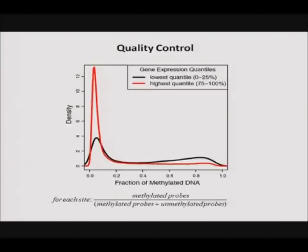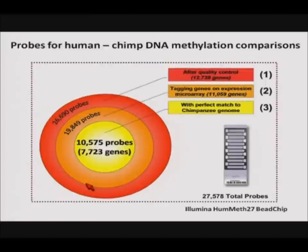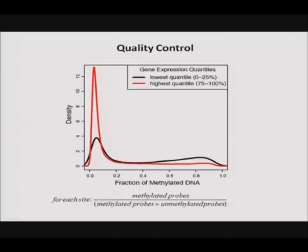We went through several quality control steps to confirm expected patterns in our data. The first was to look for correlations between methylation and expression, expecting negative correlations, which we do indeed see. Here I'm plotting density distributions of methylation values for genes with the highest and lowest expression levels averaged over all samples. The x-axis shows the fraction of methylation. The majority of sites were unmethylated regardless of tissue or species, and highly expressed genes show an enrichment of low methylation values compared to lowly expressed genes.